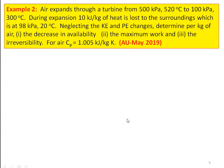Example number 2 from the May 2019 question paper: air expands through a turbine from 500 kPa, 520°C to 100 kPa, 300°C. During expansion, 10 kJ/kg of heat is lost to the surrounding at 98 kPa and 20°C. Neglect kinetic and potential energy changes. Determine per kg of air: (1) decrease in availability, (2) maximum work, (3) irreversibility. Take Cp = 1.005 kJ/kg·K.